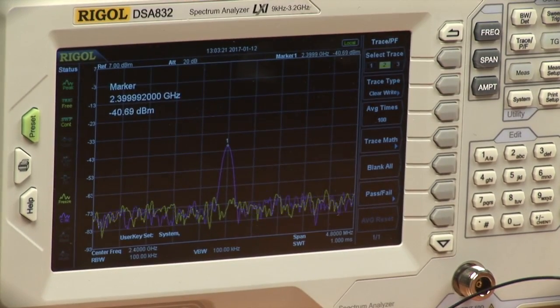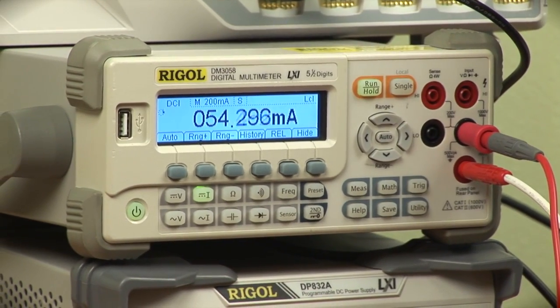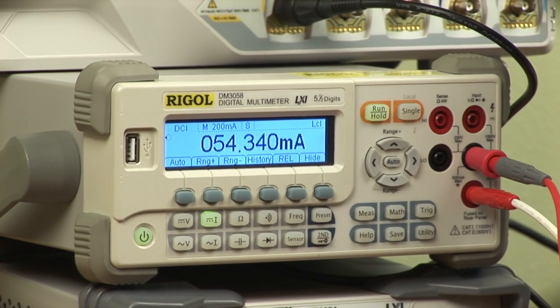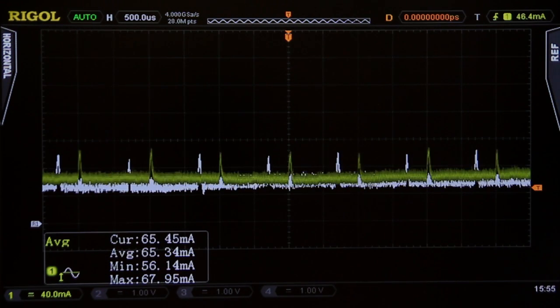And we see a little more current being consumed. The DMM is now reading 54 milliamps, and in the scope we can see up to 64 to 65 milliamps.